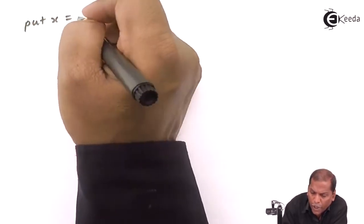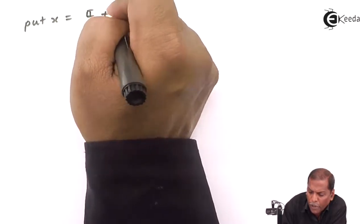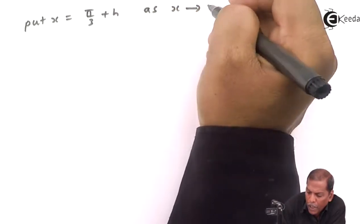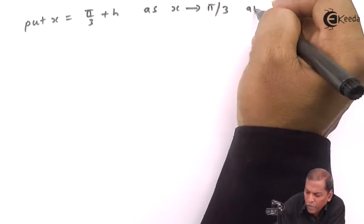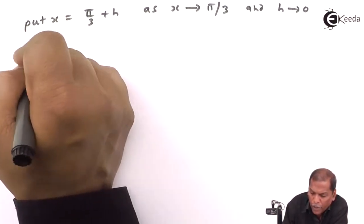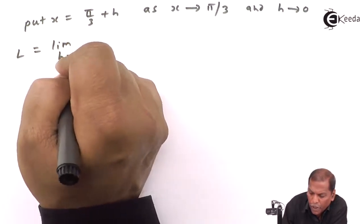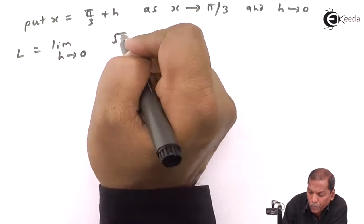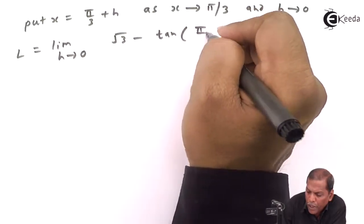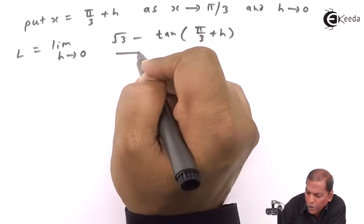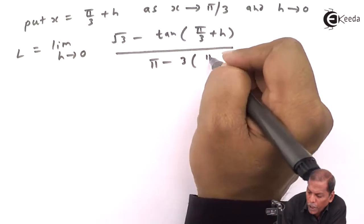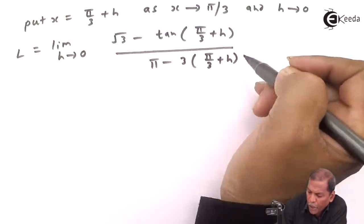To apply the substitution method, we put x = π/3 + h, so that as x tends to π/3, h tends to 0. The next step is: L equals limit as h tends to 0 of (√3 − tan(π/3 + h)) divided by (π − 3·(π/3 + h)).